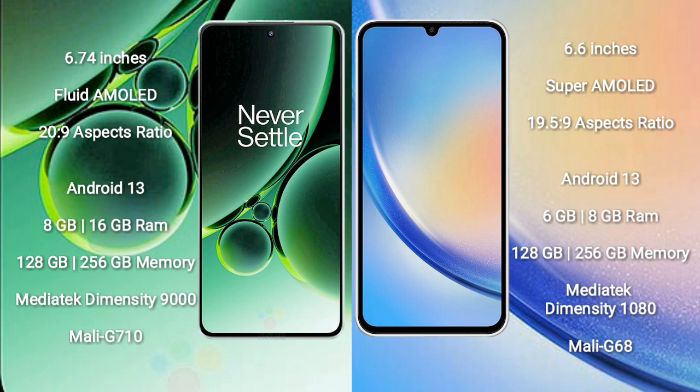Both OnePlus Nord 3 and Samsung Galaxy A34 run on the Android 13 operating system. OnePlus Nord 3 comes with 8GB or 16GB RAM and 128GB or 256GB internal storage. Samsung Galaxy A34 comes with 6GB or 8GB RAM and 128GB or 256GB internal storage.